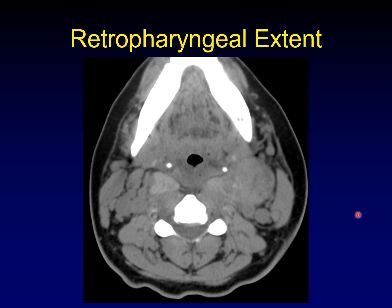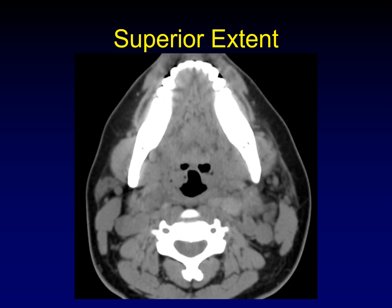Once we've talked about the effect on the trachea, we talk about the extent of the mass. For retropharyngeal extent, this is a yes or no question — the importance is that the surgeon will need to chase that and make sure they get all of it out of the retropharyngeal space. For superior extent, choose an anatomic marker that makes sense — the top of the goiter may be at the level of the angle of the mandible, the carotid bifurcation, or the hyoid bone — whatever anatomic marker indicates the superior extent.